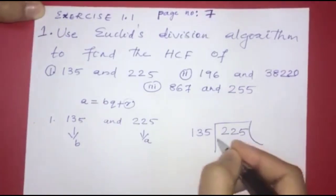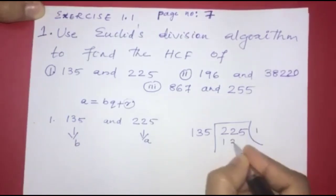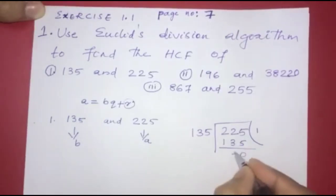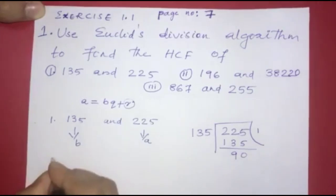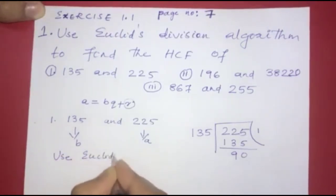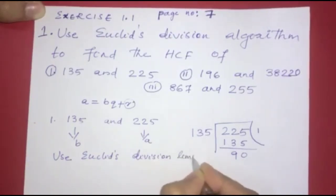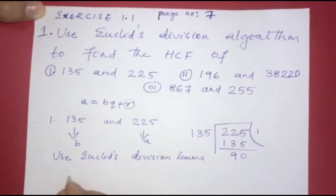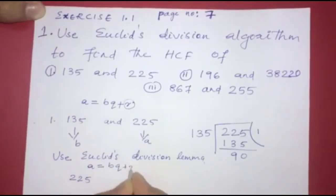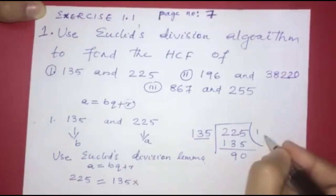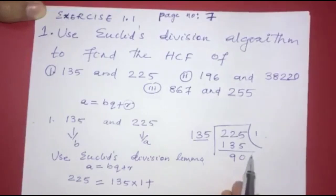We divide 225 by 135 one time, giving quotient 1. Subtract to get remainder 90. Using Euclid's division lemma: 225 is equal to 135 into 1 plus remainder 90.